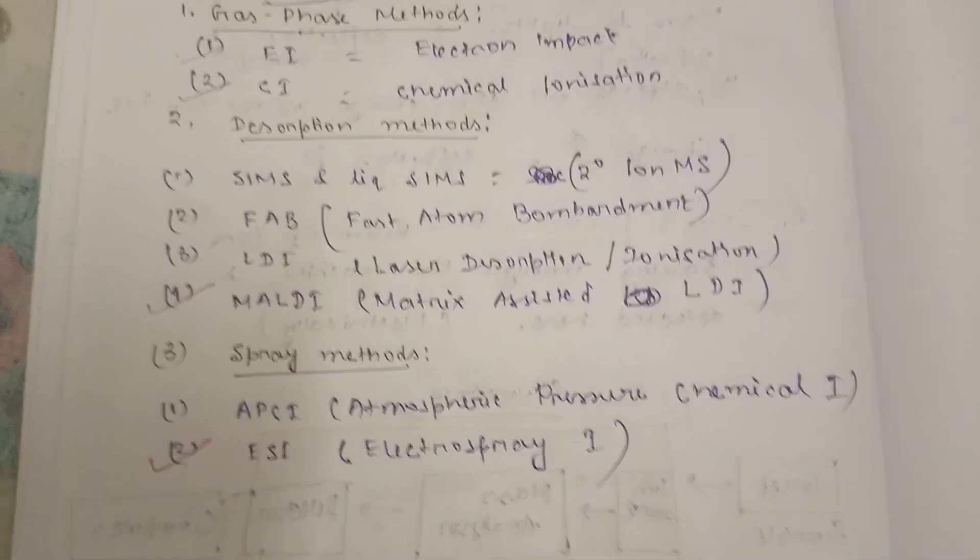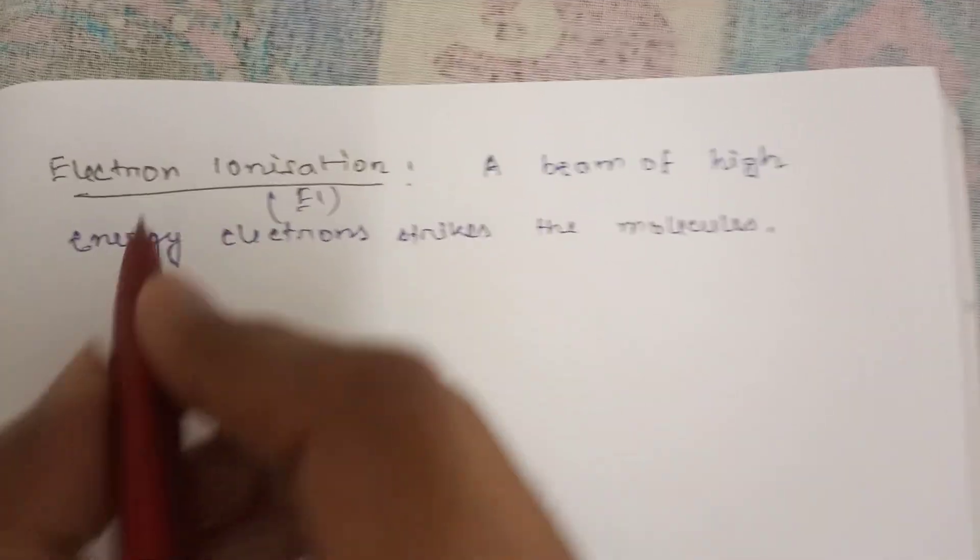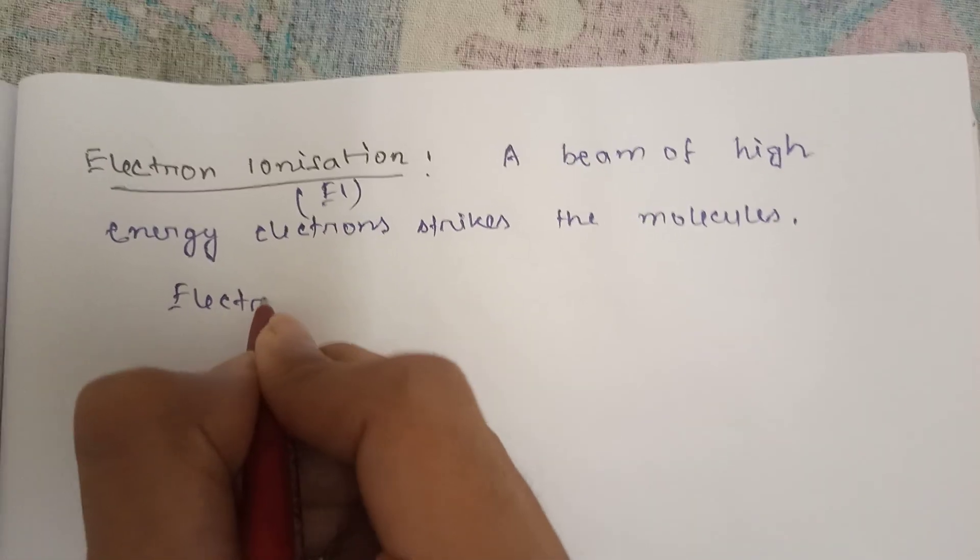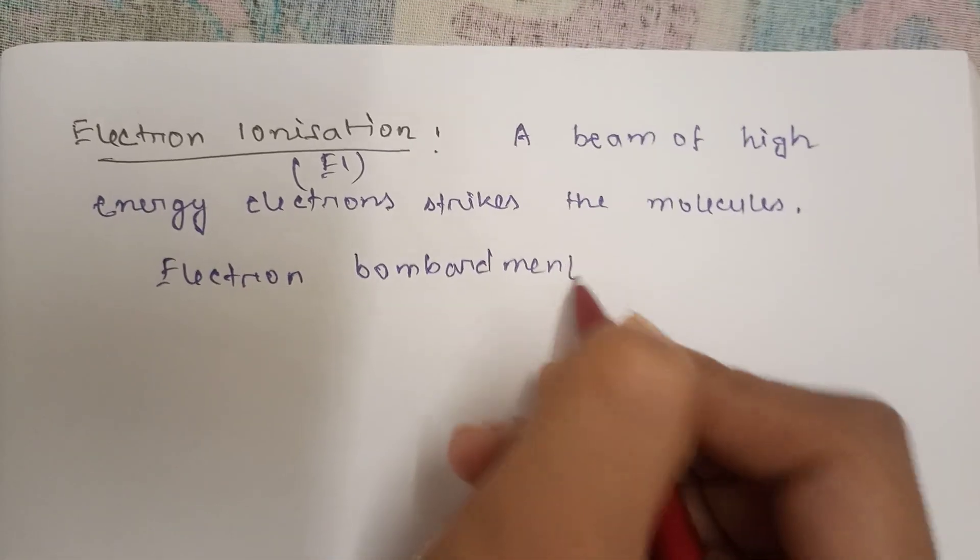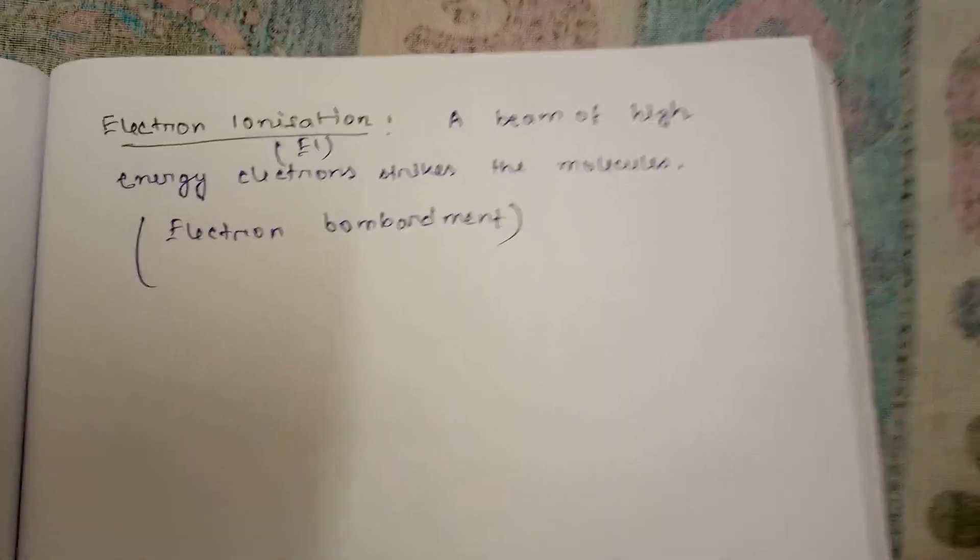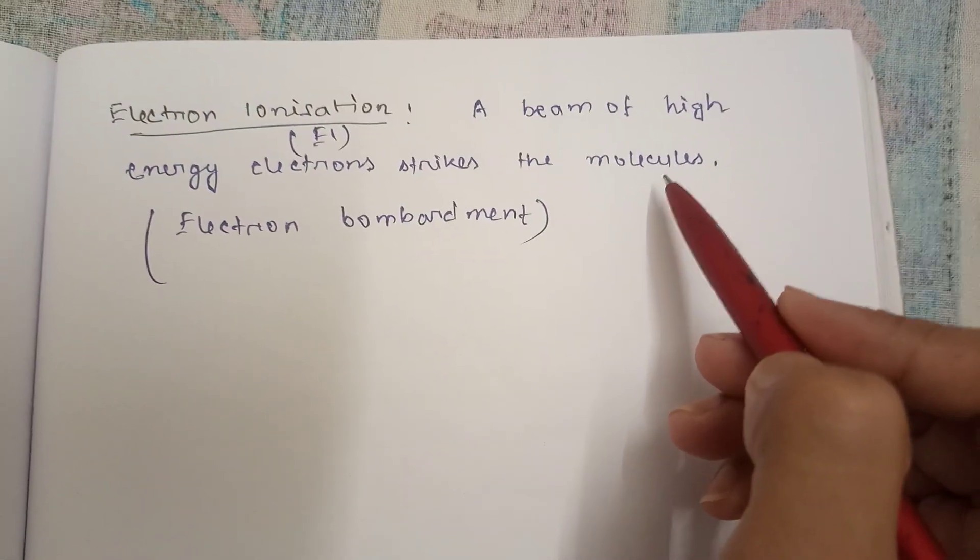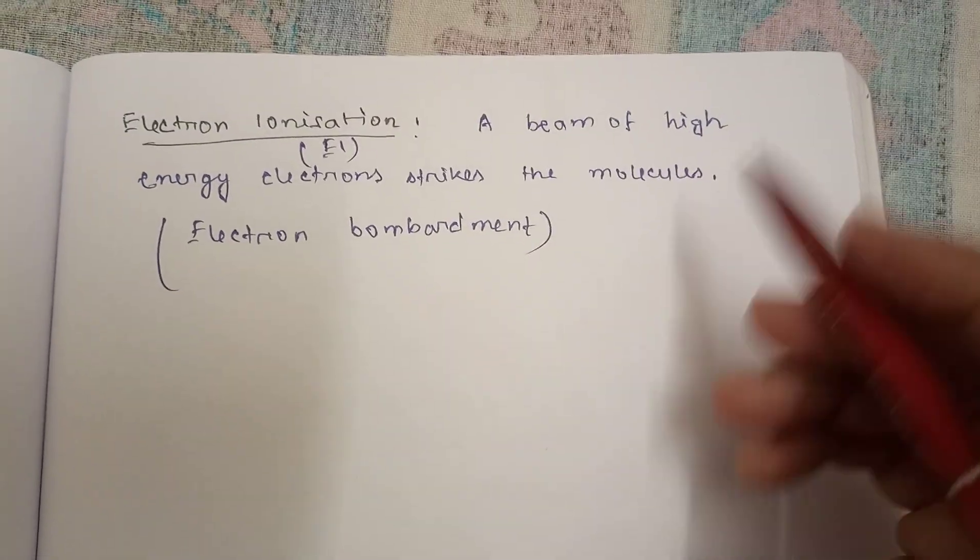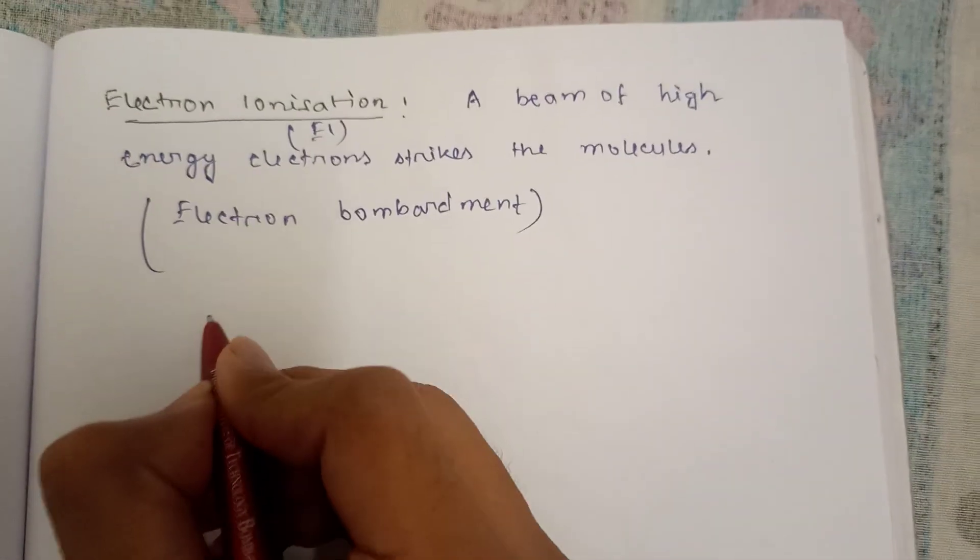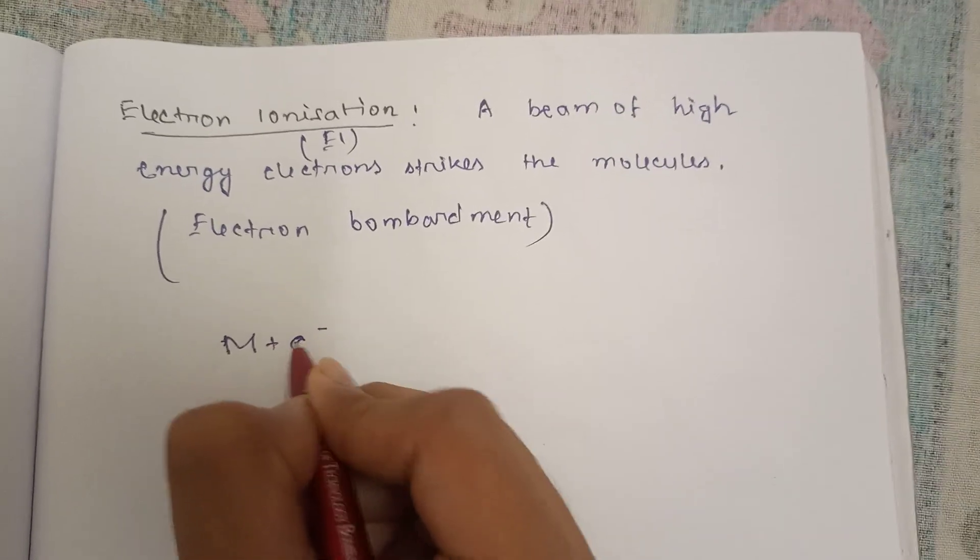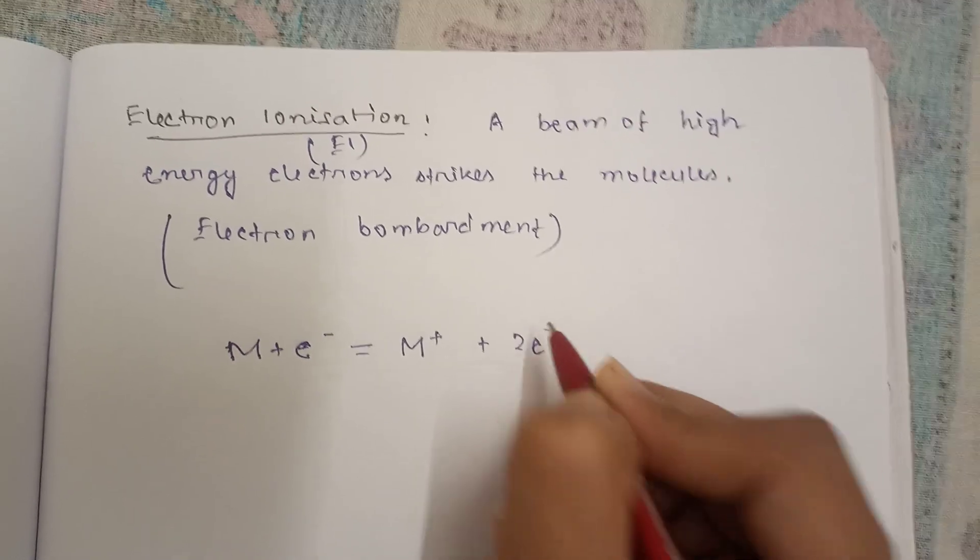The first is electron ionization or EI, sometimes called electron impact. What happens in EI? A beam of high energy electrons strike the molecules. The electron-molecule collision strips an electron from the molecule. M will be hit by one electron, and one electron will be out, creating a cation.